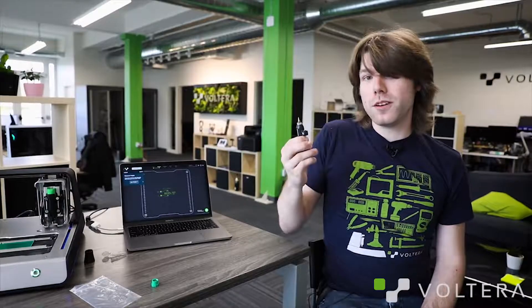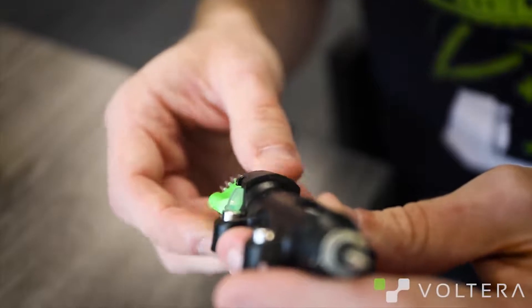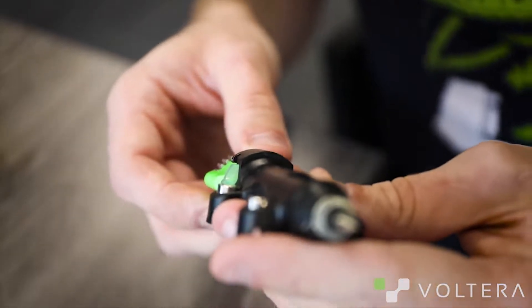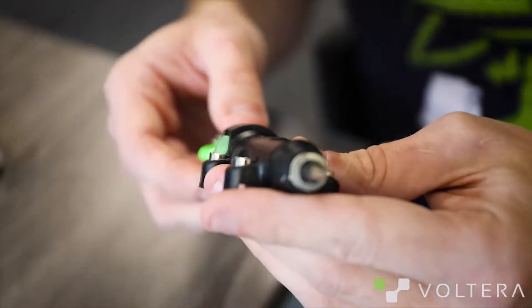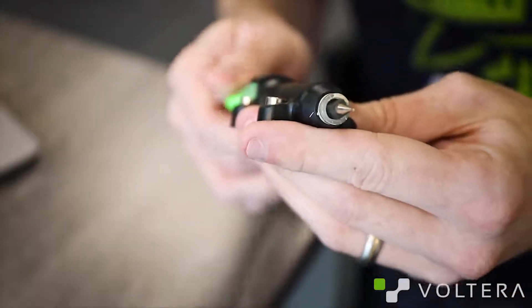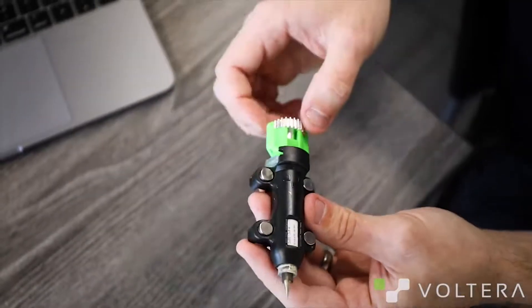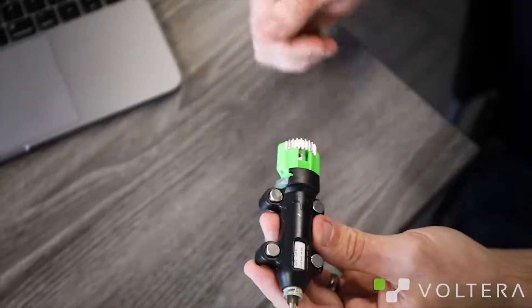Next, we're going to prime the dispenser so we can lay some traces on the board. This is an extremely important step. We need to pressurize the ink in this cartridge so the syringe will lay it all on the board properly. So, I'm going to turn this gear counterclockwise until I feel a slight resistance and a tiny bit of ink comes out of the nozzle. Then, I'm going to turn the gear a quarter of the way back so it doesn't leak. Super easy to do, but also super important.